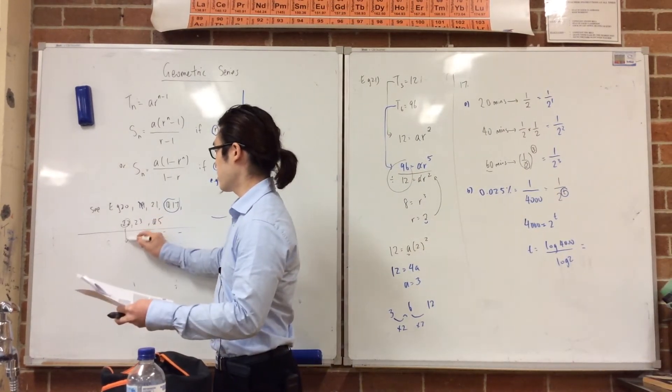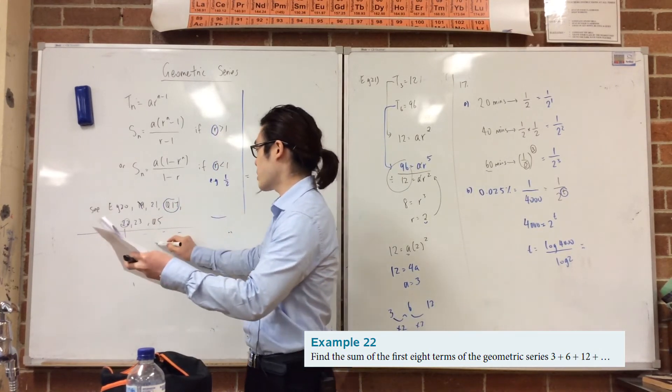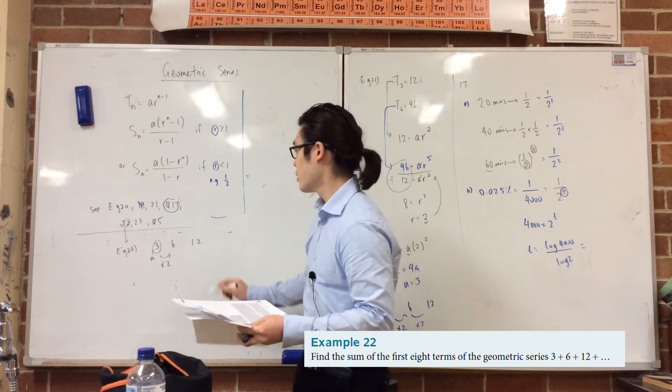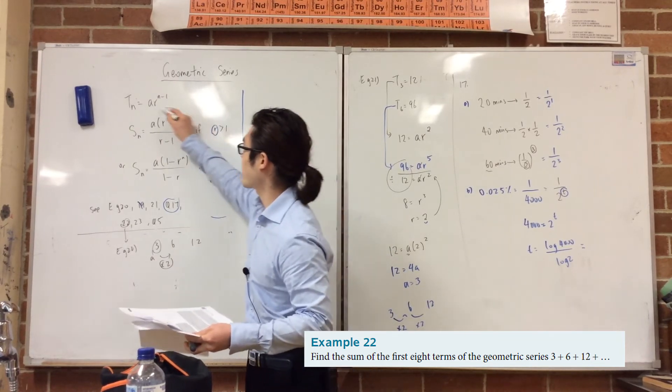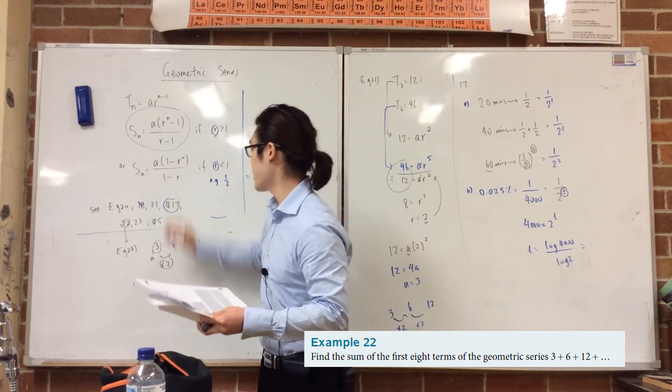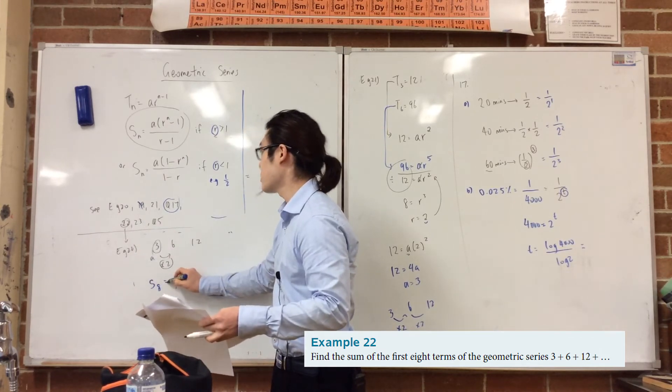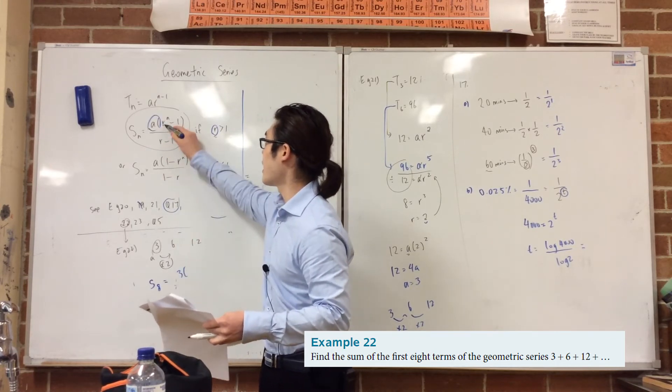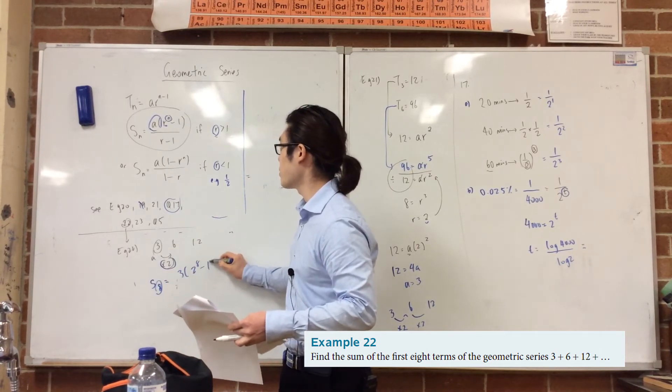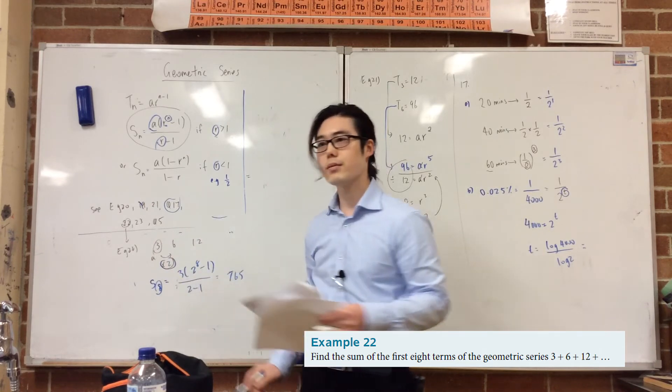Let's have a look at example 22, girls. So, find the sum of the first eight terms given you've got 3, 6, 12. So obviously that's your a. It's going up by 2. So just now, it's going up by 2, so that means we're going to plug in this formula, because obviously this formula is when it's bigger than 1. So let's plug it in. Find the first eight terms, so it's S8 is equal to 3, bracket, r is 2 to the power of n. That's your 8, take away 1 over r take away 1, which is 2 take away 1. So that will give you 765. Pretty straightforward.